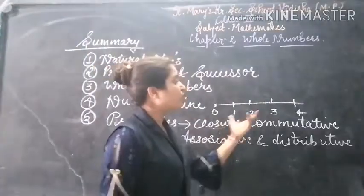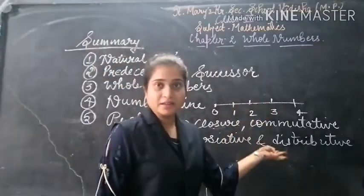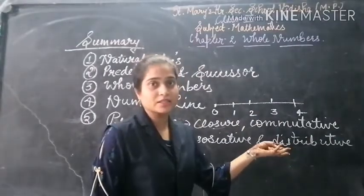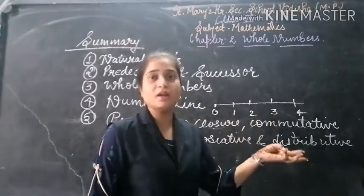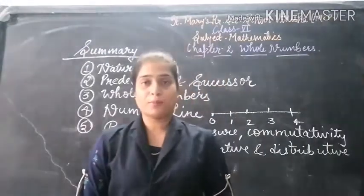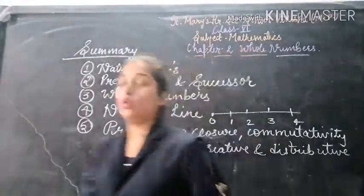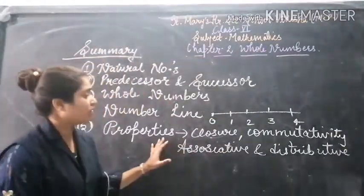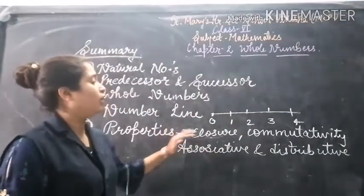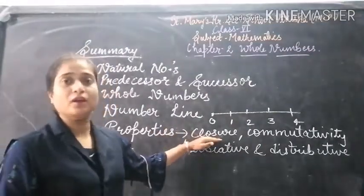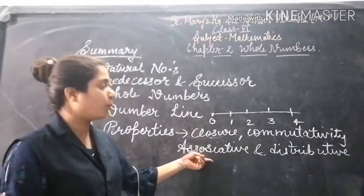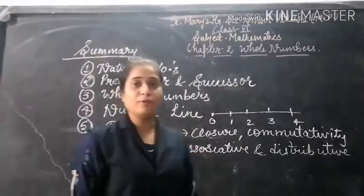In this number line, we can add, subtract, or multiply any number. Next, we have properties of whole numbers. We have studied closure property, commutativity property, associative property, and distributive property.